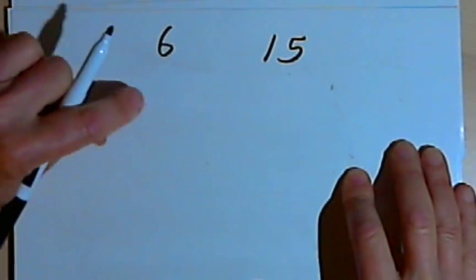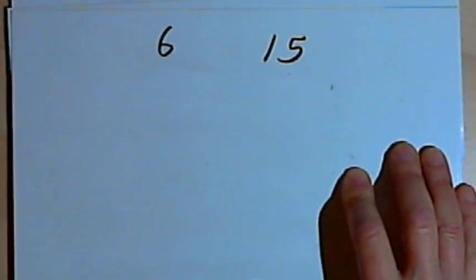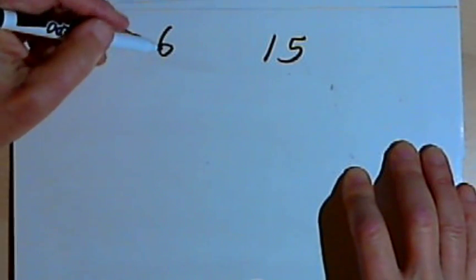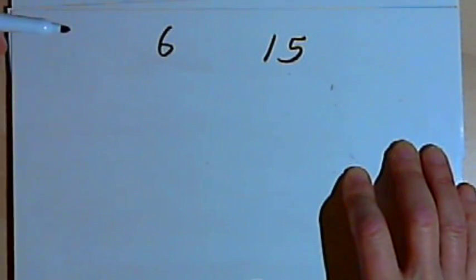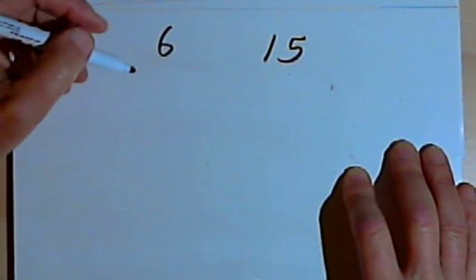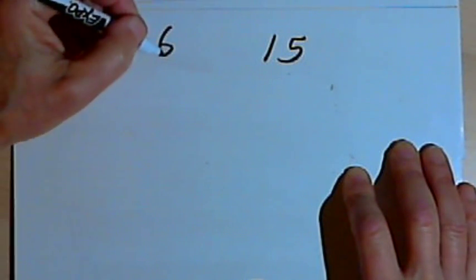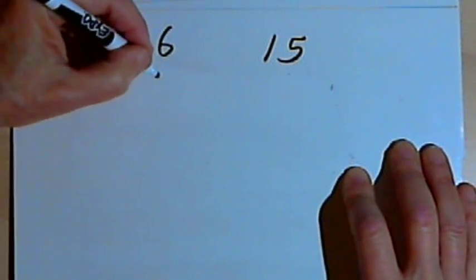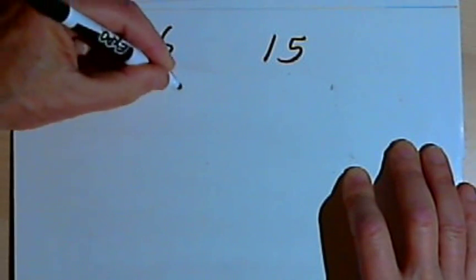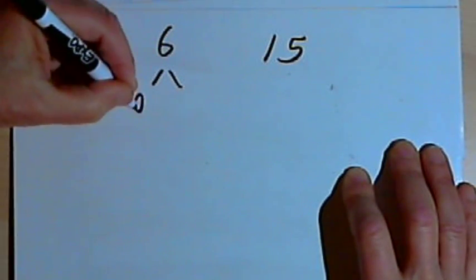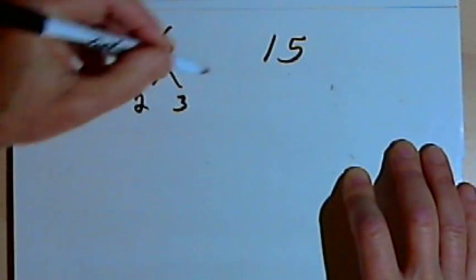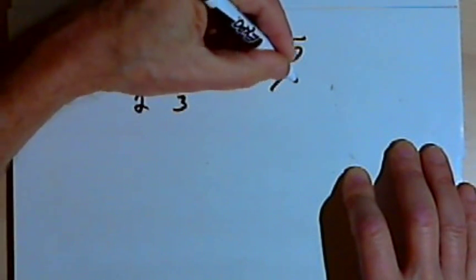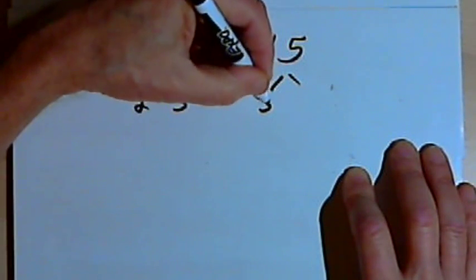I'm going to start out with the numbers 6 and 15, and I want to find both the greatest common divisor and the least common multiple. I can do both of those things by getting the prime factorizations. The prime factorization of 6 is 2 and 3. The prime factorization of 15 is 3 and 5.